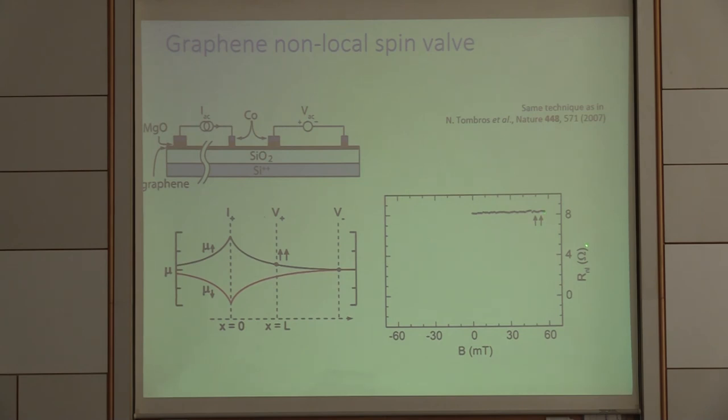So what you see here is now what we plot, an important quantity in all these experiments, is the non-local resistance, which is nothing else than this voltage here divided by this current. And that's the reason why it's non-local, because the current path is somewhere else than the voltage path. And now if the injection and the detection electrode, which is this one, are parallel, then we measure a finite value of around 8 ohms.